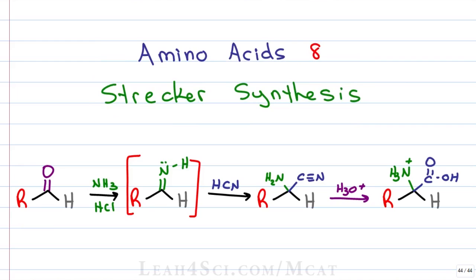The Strecker synthesis starts out with an aldehyde where the R group on the aldehyde is the amino acid side chain. For example, if you wanted to synthesize glycine, you use formaldehyde because the side chain is just a hydrogen. If you want to synthesize alanine, your R group would be a CH3 because that is the amino acid side chain.